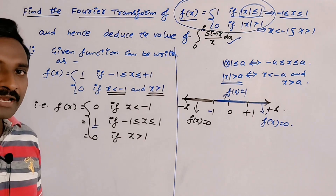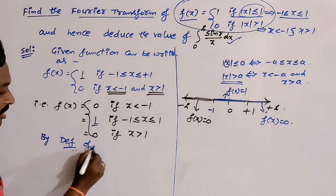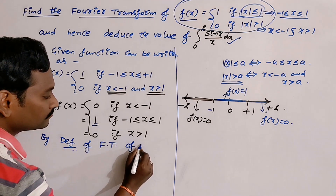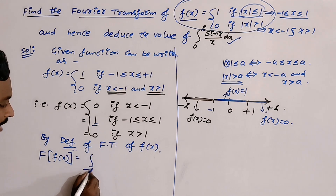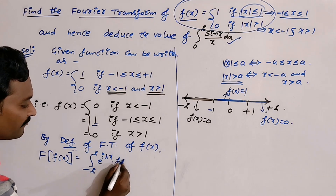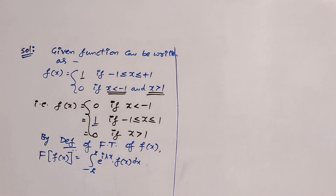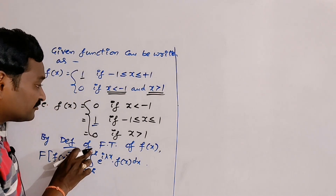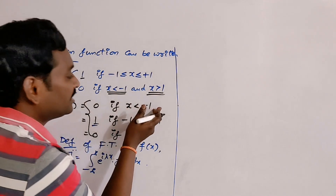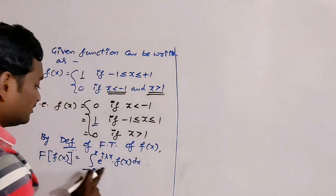Now we find the Fourier transform of this function. By definition, the Fourier transform of f(x) is the integral from −∞ to +∞ of e^(iλx) · f(x) dx, where λ is a parameter known as the kernel. Since the function has three regions, we separate the integration: from −∞ to −1, from −1 to +1, and from +1 to +∞.